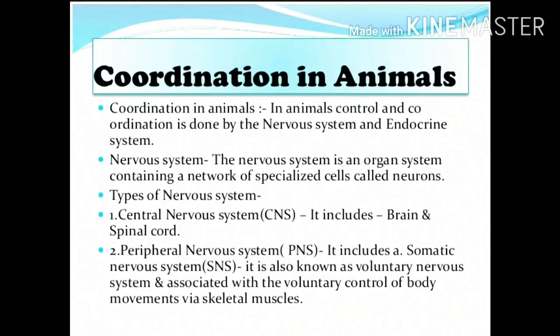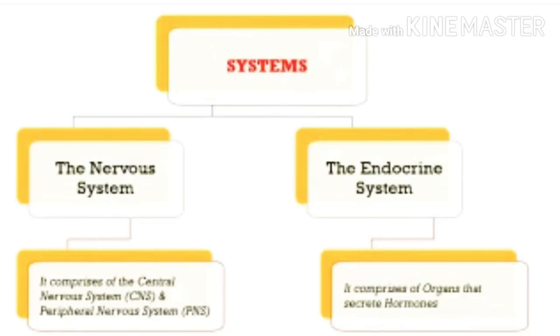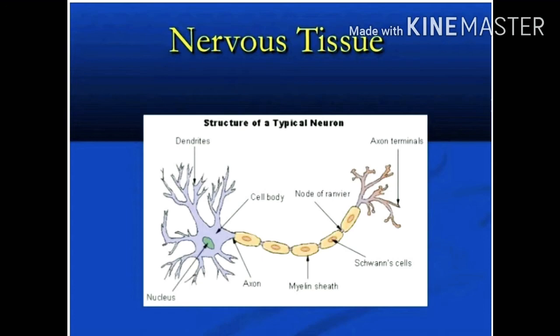In control and coordination in animals — whether unicellular or multicellular — all movements and functions are being controlled. In multicellular organisms, there are two control systems: the nervous system and the endocrine system. In animals, the nervous system is composed of nervous tissues, and these nervous tissues are made up of specialized cells called neurons.